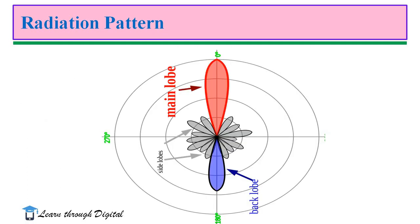This figure illustrates the radiation pattern for a directional antenna. This red color portion indicates the main lobe. The blue color portion represents the back lobe. Other portions are called as side lobes.